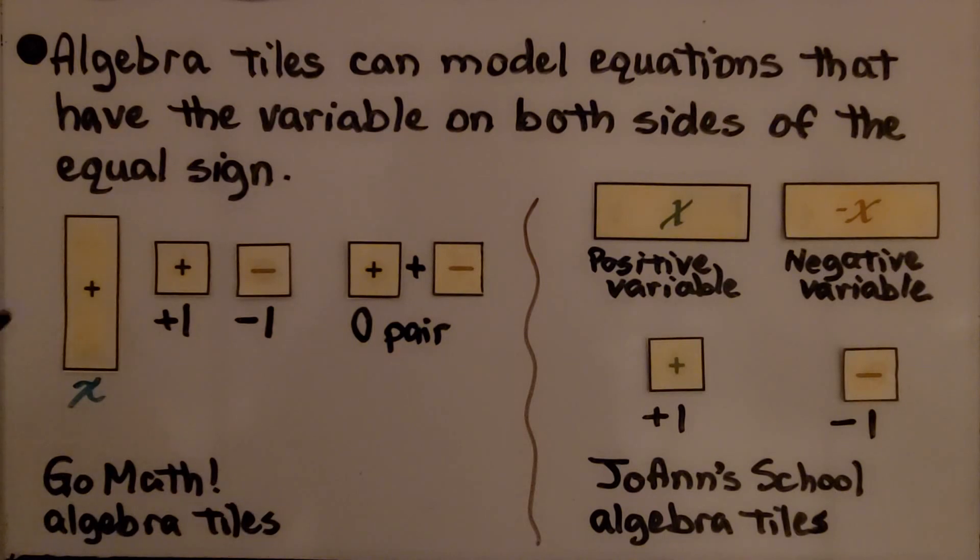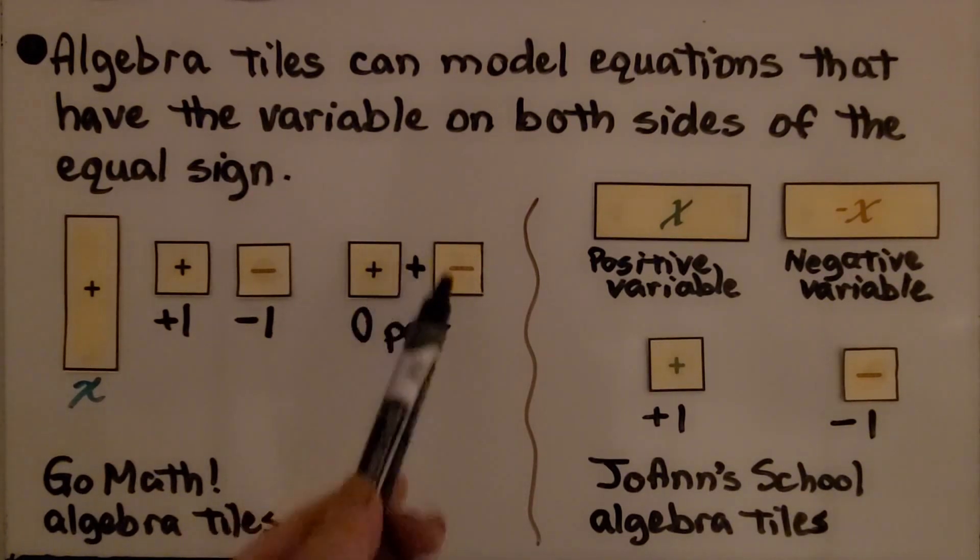Here are the GoMath algebra tiles. They use a long rectangular plus to represent the variable. They use a plus sign to represent plus one, a minus sign to represent minus one. When you put the plus one and the minus one together, it makes a zero pair. They cancel each other out.